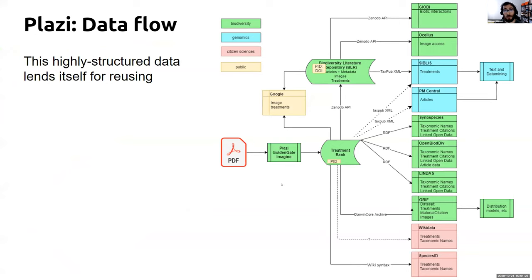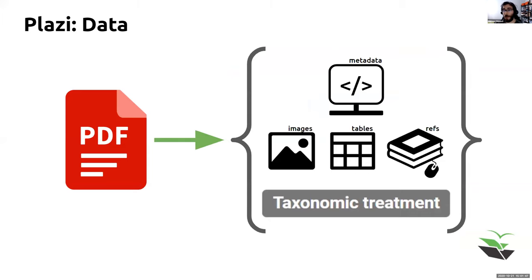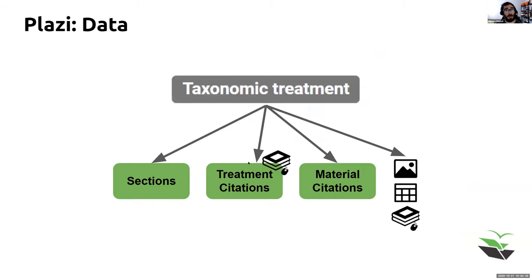Showing how connected Plazi data is: there are different players, applications, data gatherers, and places to visualize and access this data, and different export formats are used. Inside a document — an article, book, or anything taxonomic — there is specific information including the metadata, images, tables, and references, but also what Plazi calls the taxonomic treatment. The taxonomic treatment has different sections worth explaining carefully.